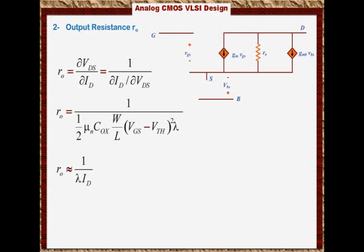Or if you decrease the current, you also increase Ro. So we have these two options to control Ro: increase the length of the channel or decrease the current of the transistor.